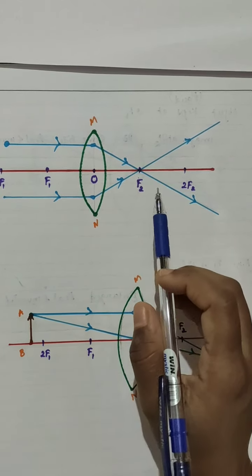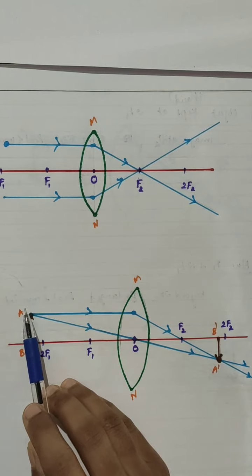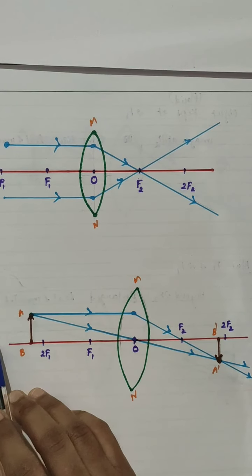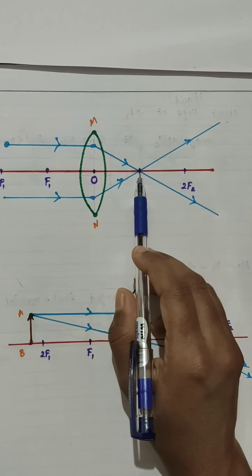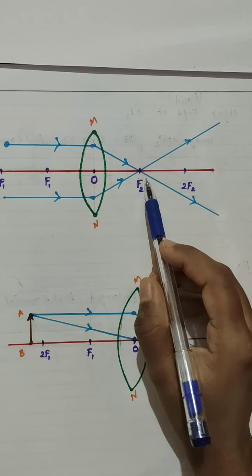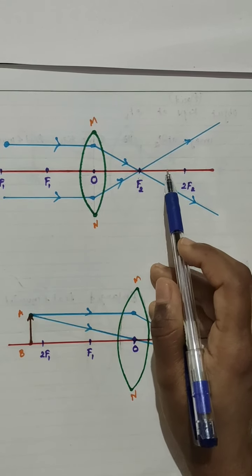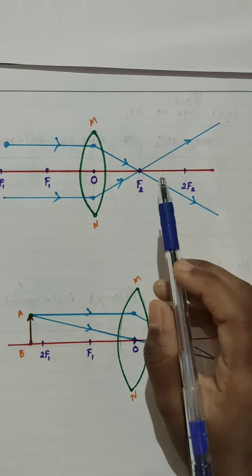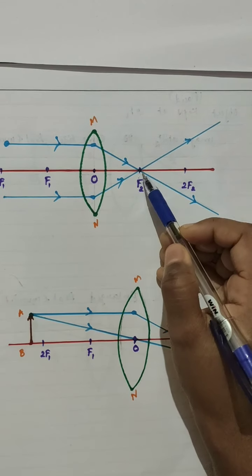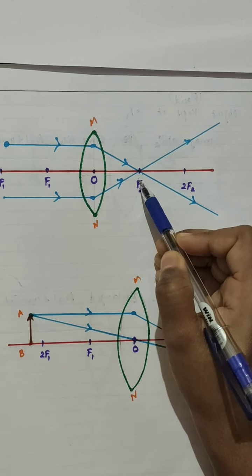So we are getting the image of the object kept at infinity at F2. What are the characteristics? The position is at F2. The size is point-sized or highly diminished. It is a real image because actual intersection of refracted rays is taking place. And it is an inverted image.